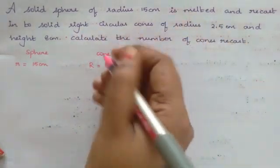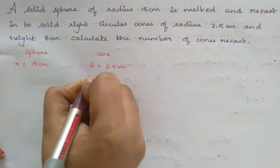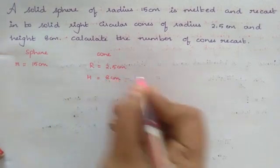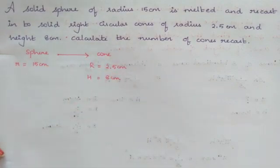What's the radius of the cone? It is 2.5 centimeter. Height of the cone is 8 centimeter. That's it. Now a sphere is converted to a cone.